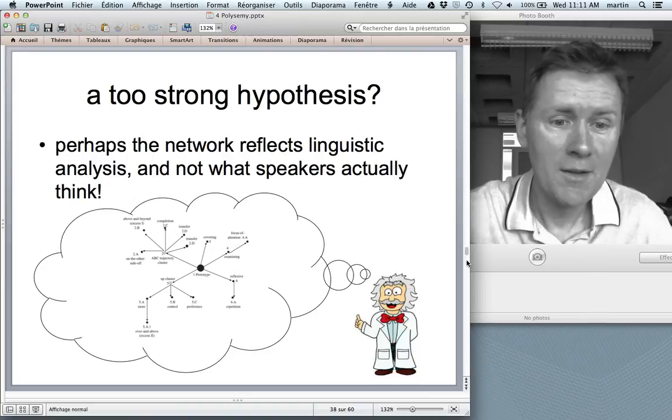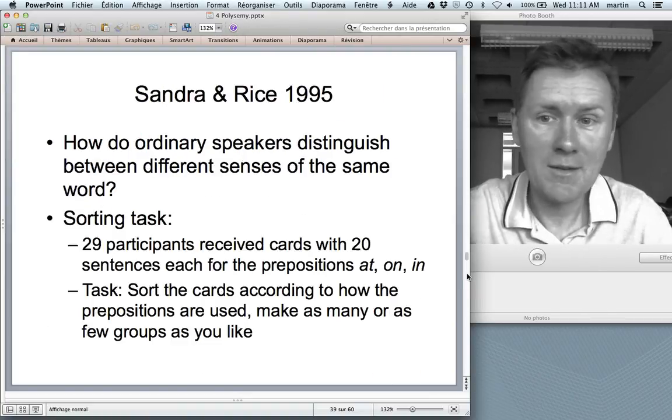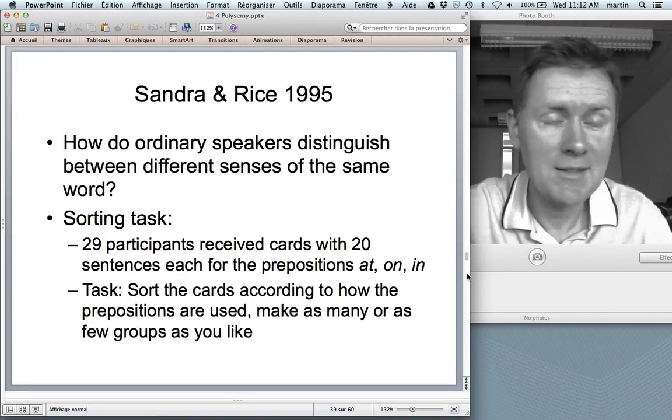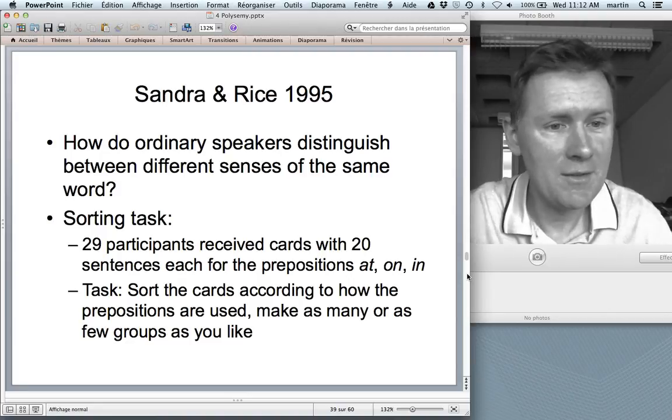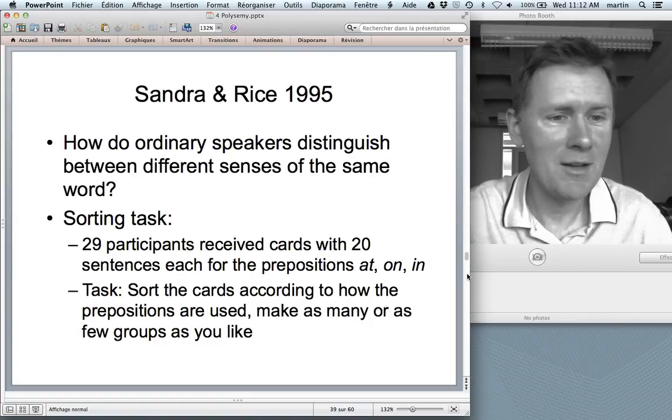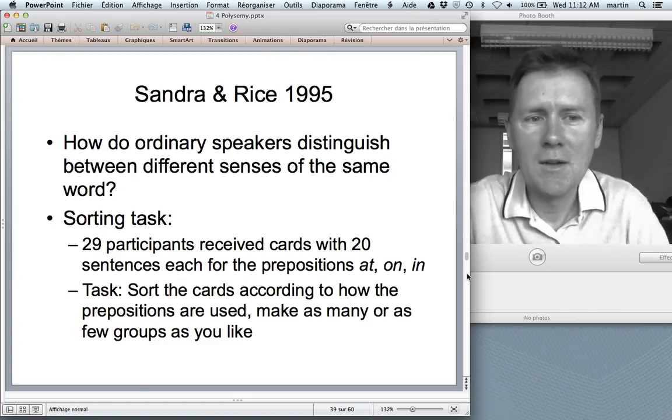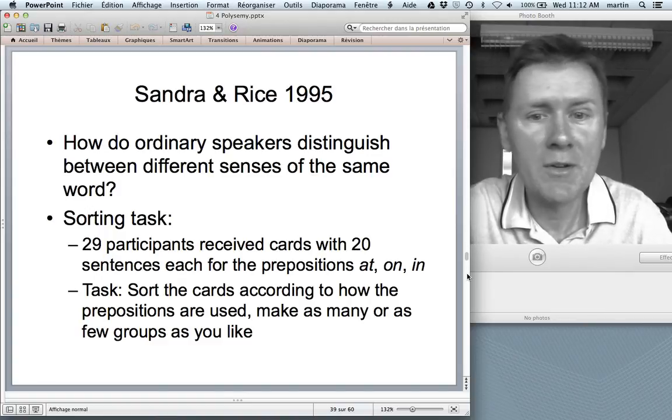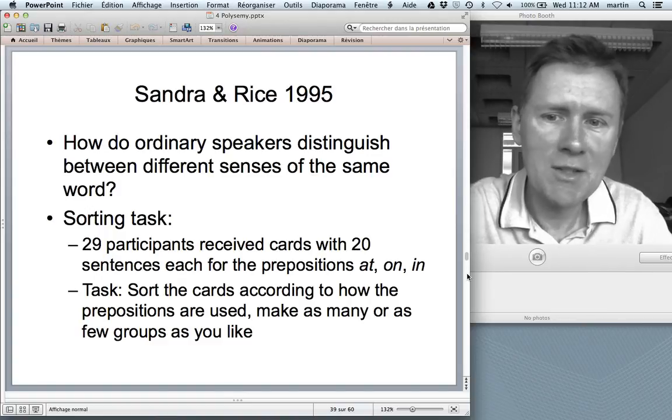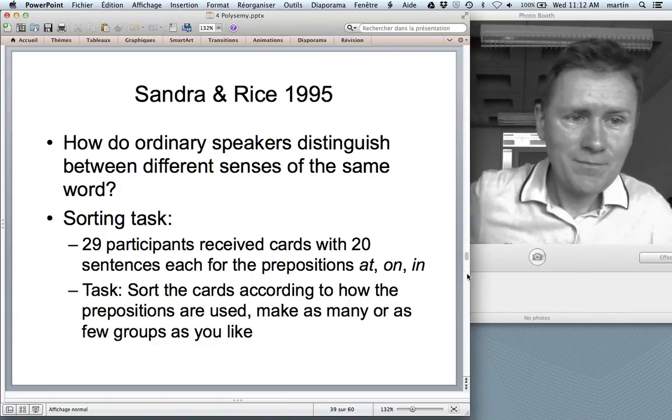The more skeptic among you will think, well, maybe is that the too strong hypothesis? Maybe the network reflects the ideas of some crazy professor and not the ideas that actual speakers have in their minds. And that's a valid criticism. That's a criticism that has been voiced by, for instance, Sandra and Rice in a classic paper from 1995. So they were interested in these network analyses and how you could lend more credence, how you could provide more evidence to analyses of this kind. So they asked, how do ordinary speakers distinguish between different senses of the same word? And they did something.